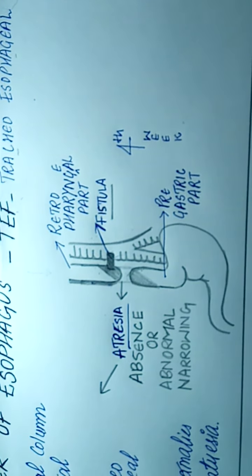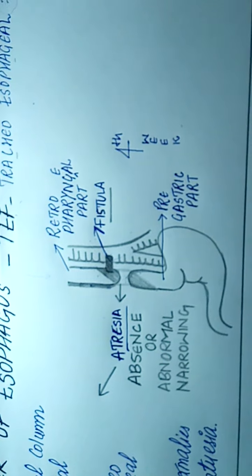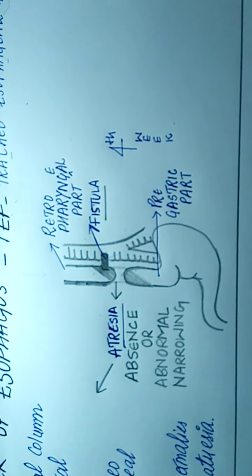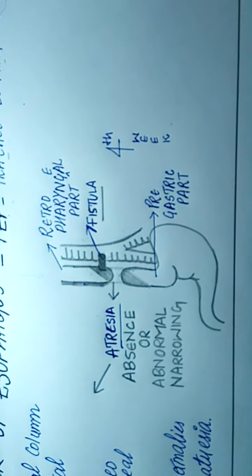So here the esophagus is connected to the trachea through a fistula. There is a presence of atresia, and because of that the proximal and the distal part is not connected and the food will not pass through the esophagus.